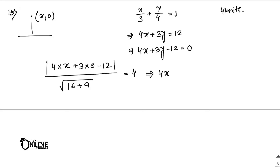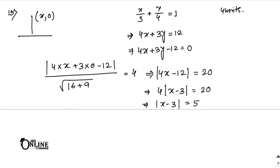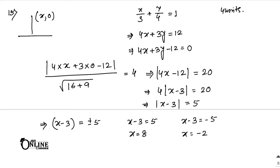This gives |4x minus 12| = root 25 times 4, which is 5 times 4 = 20. Factoring out 4: |x minus 3| = 5. So x minus 3 = ±5. When x minus 3 = 5, x = 8. When x minus 3 = minus 5, x = minus 2. Therefore the required points are (8, 0) and (minus 2, 0).